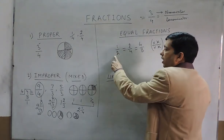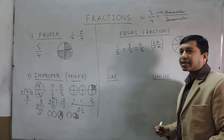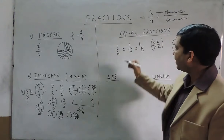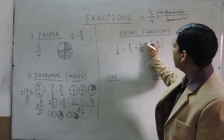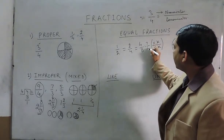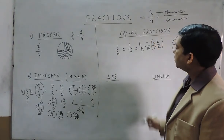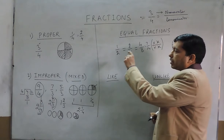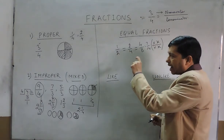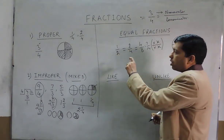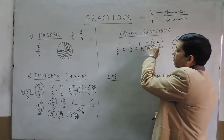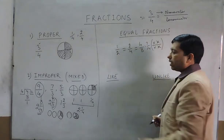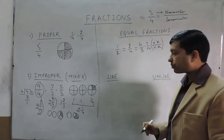For example, 1 upon 2 — if I multiply both by 7 and 7, it becomes 7 upon 14. So 1 upon 2 is equal to 7 upon 14. Whenever we multiply the numerator and denominator both by a constant number, this is considered to be an equal fraction.